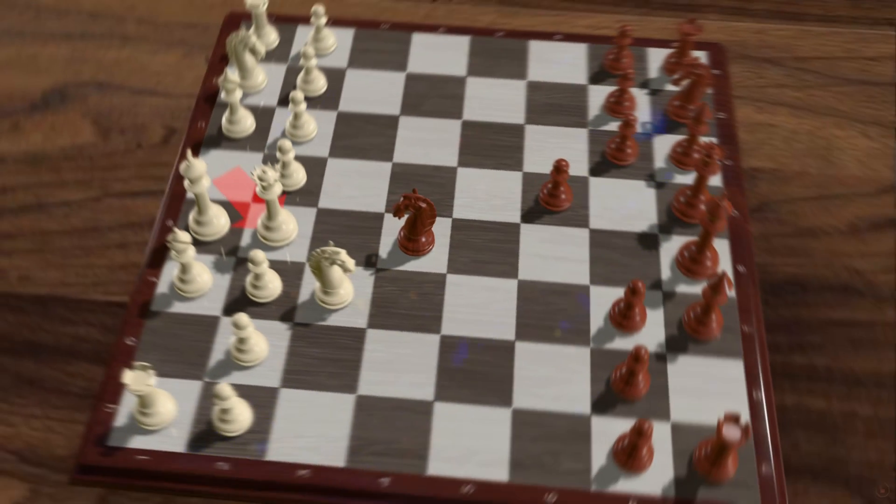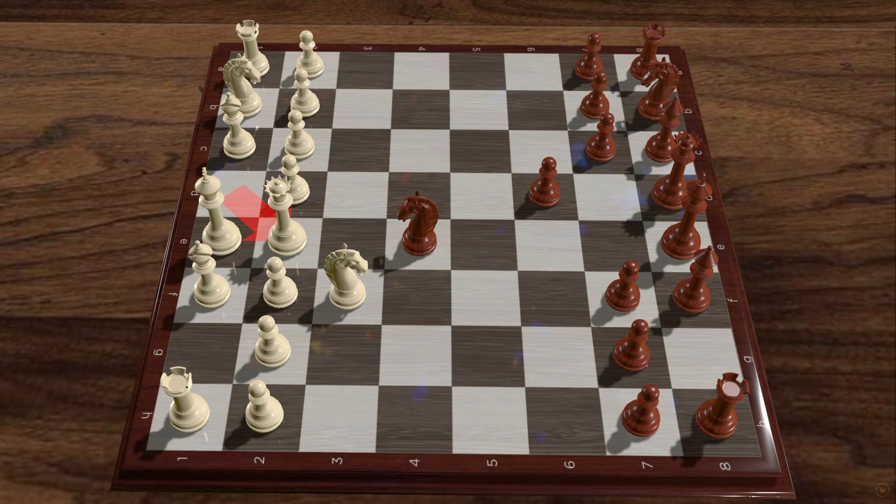Queen to e2 attacks black's knight. Black needs to defend the knight because it is pinned to the black king. This is an absolute pin, meaning that it is illegal to move the knight because doing so would expose the black king to a check from the white queen.